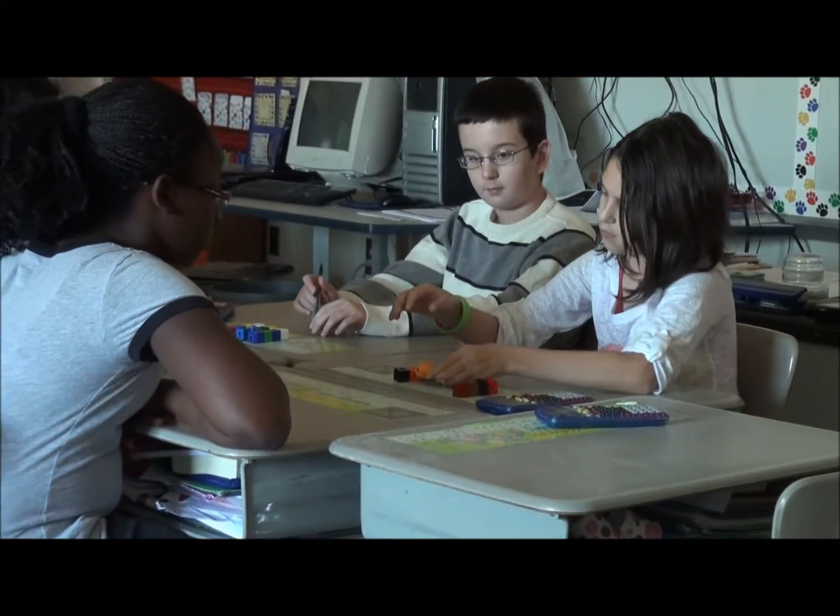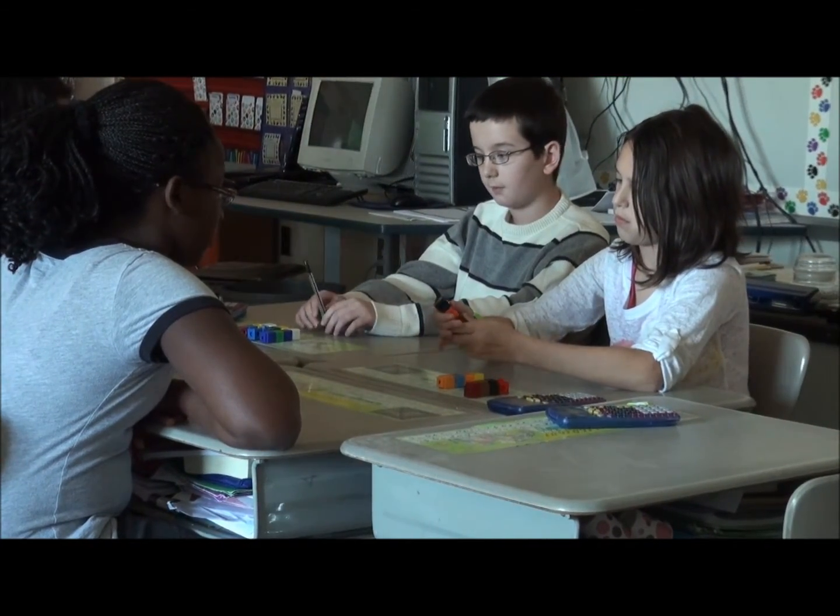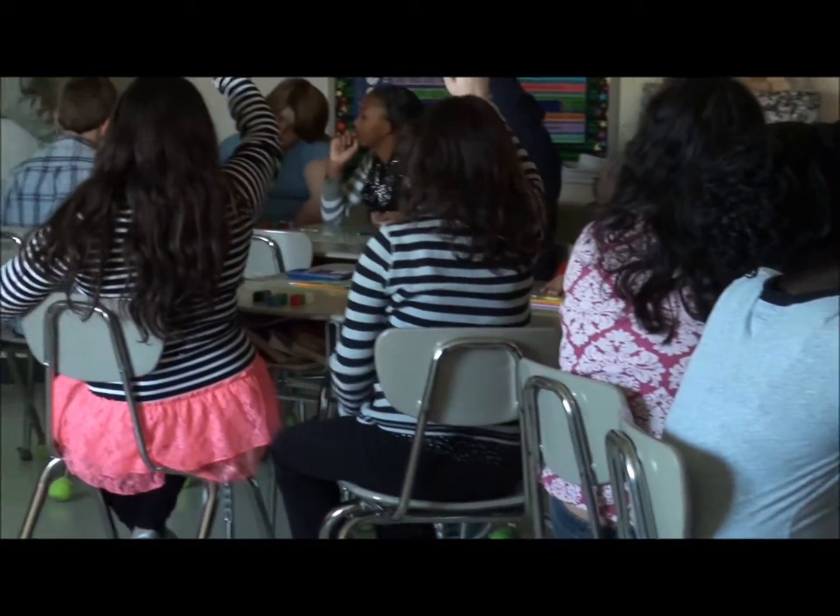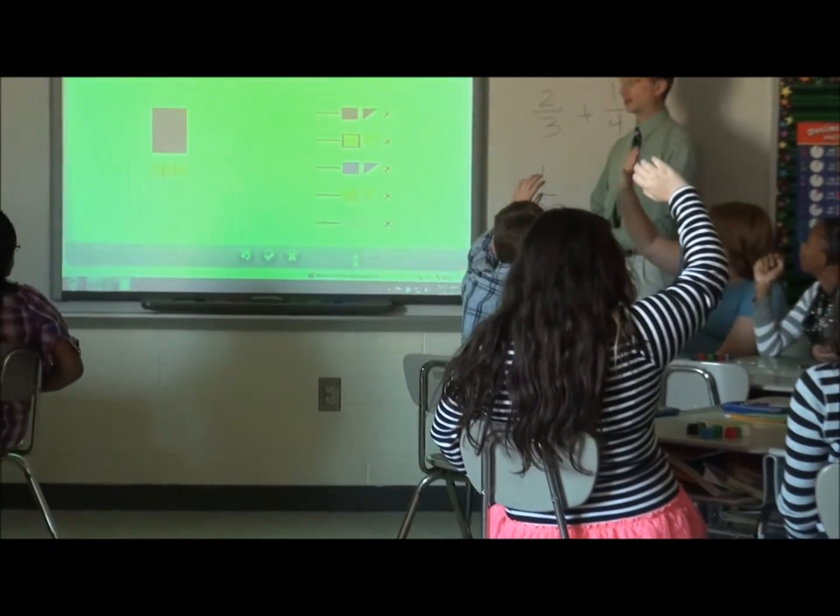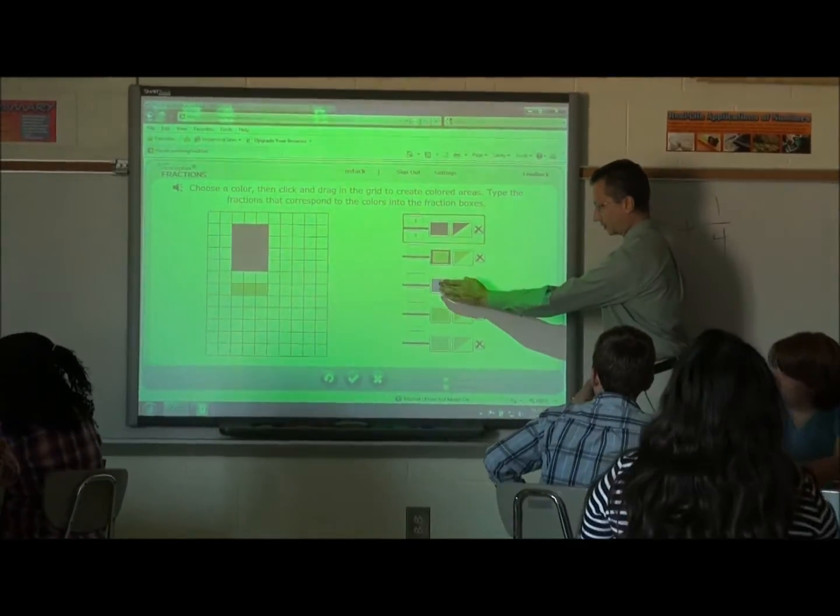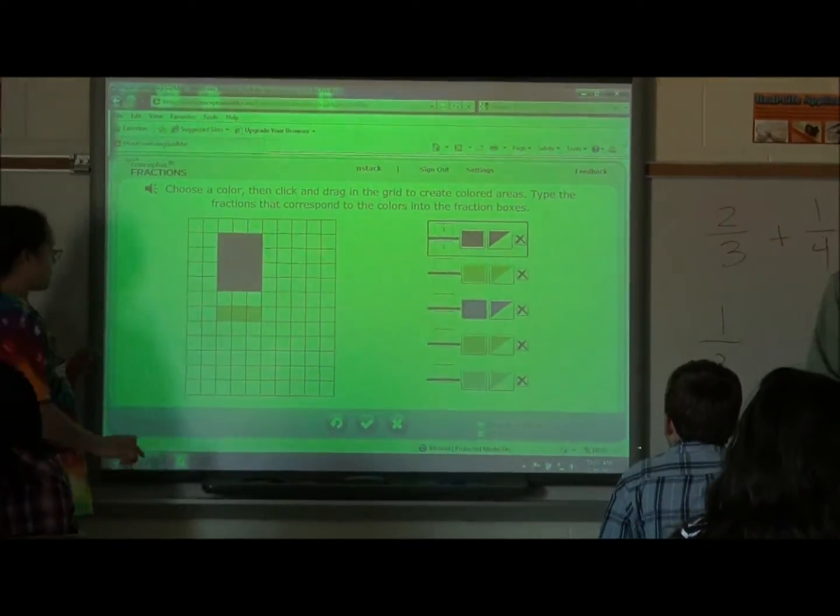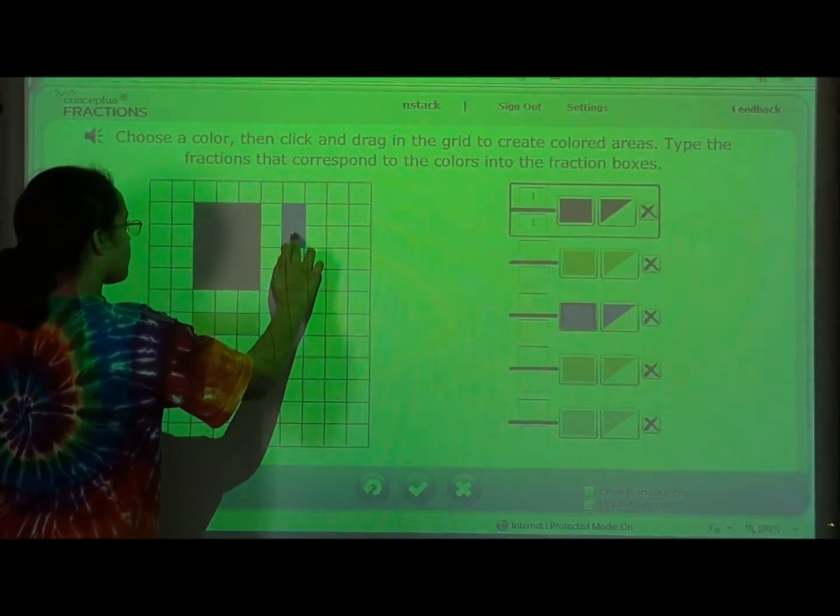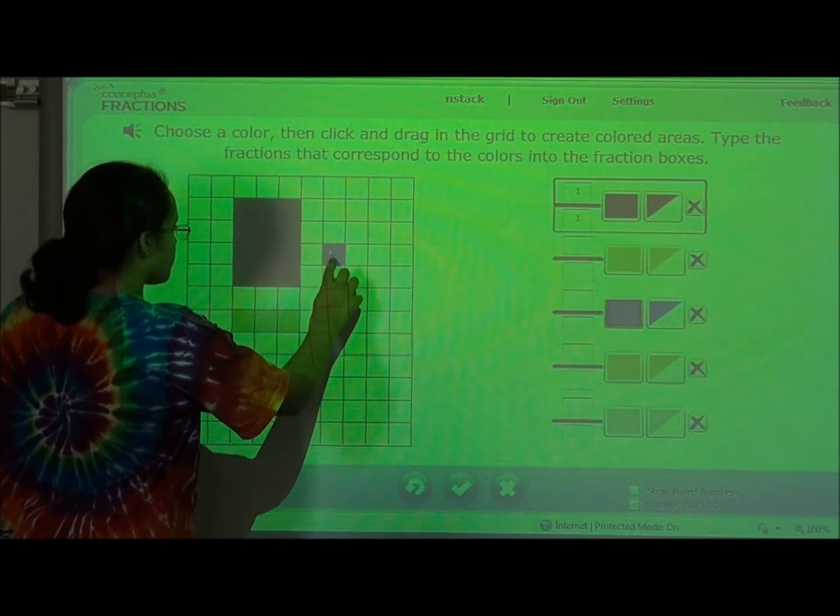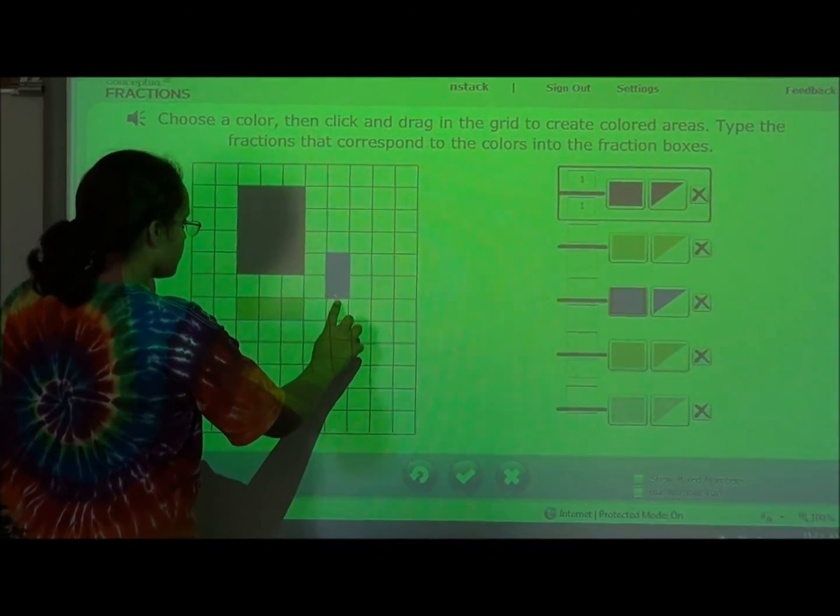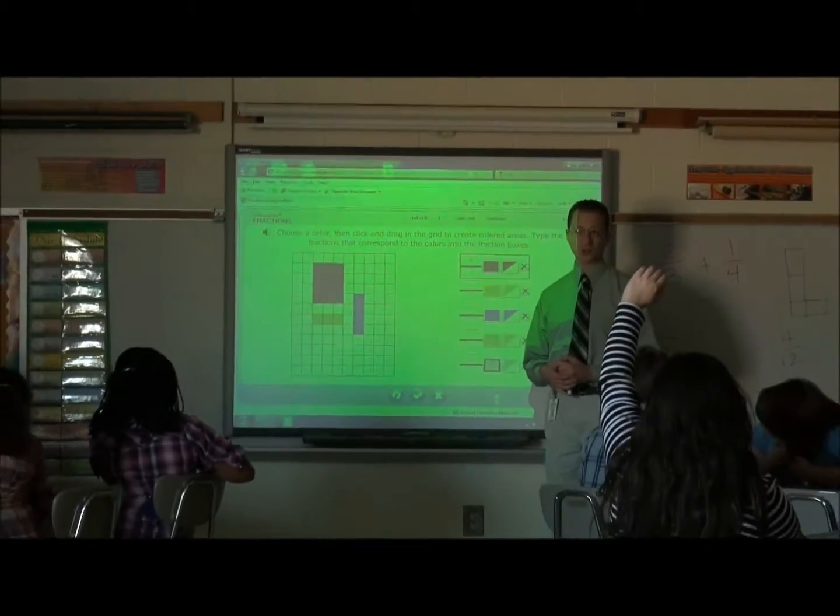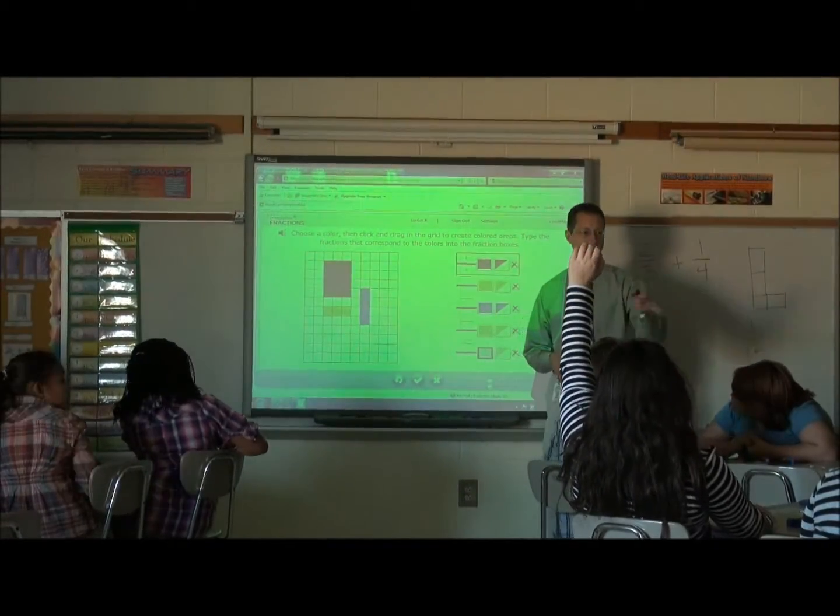I need one person to come up and draw up there what your one section of your three parts looks like. Alexis, give me a different color. How many are you trying to pick? What's another way that I could show this? Visual. Go ahead, Tyler.